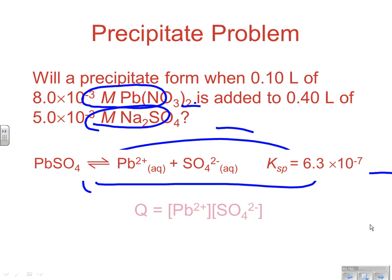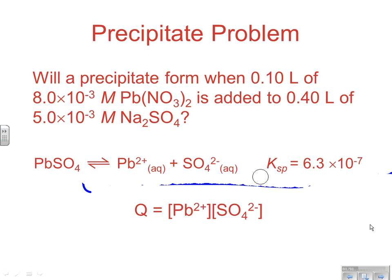Let's take a look at a problem. You've got 0.10 liters of 8.0 times 10^-3 molar concentration of lead nitrate. And that's going to be added to 0.40 liters of that concentration of sulfate. The first thing you need to do is evaluate what's going to potentially form our insoluble product. Sodium is always soluble. Nitrate is always soluble. Those things are meaningless in these two situations. So what we're really looking at is lead coming together to make lead sulfate, which is a relatively low solubility substance. The Ksp for that particular reaction is 6.3 times 10^-7. So this is a low solubility substance.